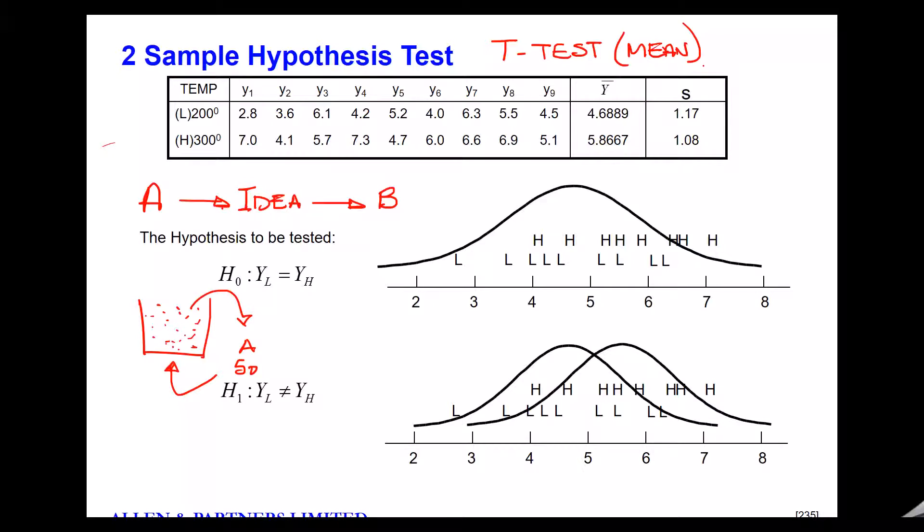But if you took another sample out of the same bin, so now we'll take sample B, we'll take another 50, when you measure the same feature and you work out the average result, would you expect to get an identical set of results or an identical average? Well, no, of course not. It's two samples.